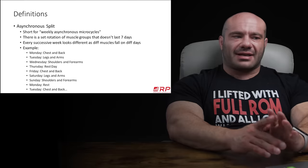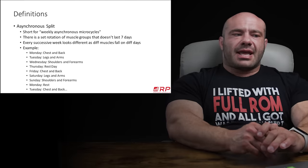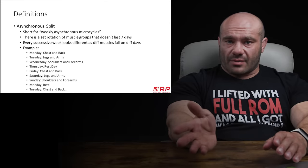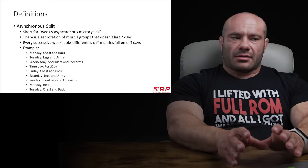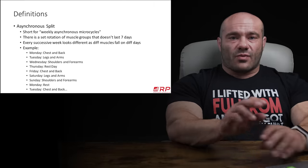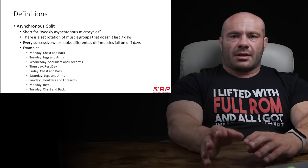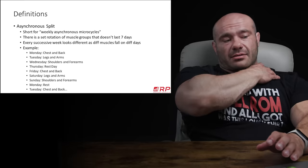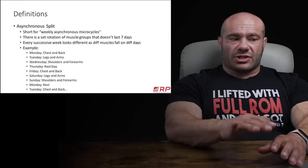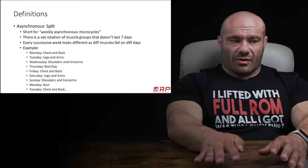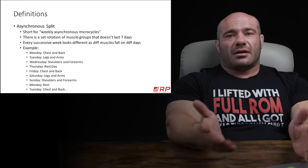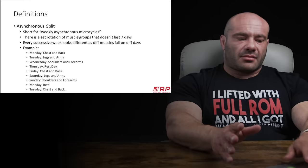The asynchronous split — short for weekly asynchronous microcycles — is where the microcycles of your training, the mini rotations you go through all your muscle groups until you come back around to train them again when they've healed, is asynchronous to the week. It does not line up with the week. So that rotation does not last seven days, and successive weeks can look quite different from one another. For example, Monday chest and back, Tuesday legs and arms, Wednesday shoulders and forearms — sounds similar, right? Thursday you take a rest day and then restart: chest and back, legs and arms, shoulders and forearms. Monday is now a rest day, Tuesday is chest and back, et cetera. Last Tuesday was legs and arms; this Tuesday is chest and back. It's different because it doesn't align on seven days. It's as simple as that.